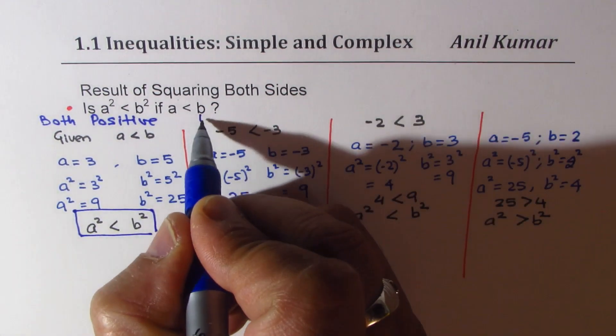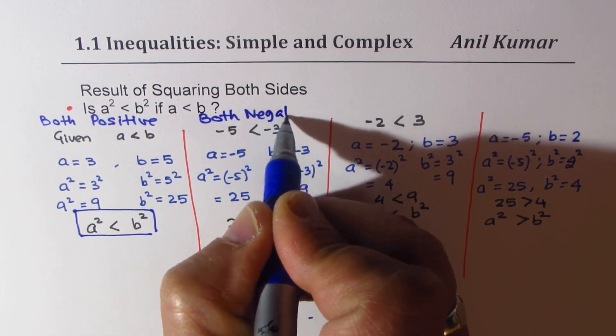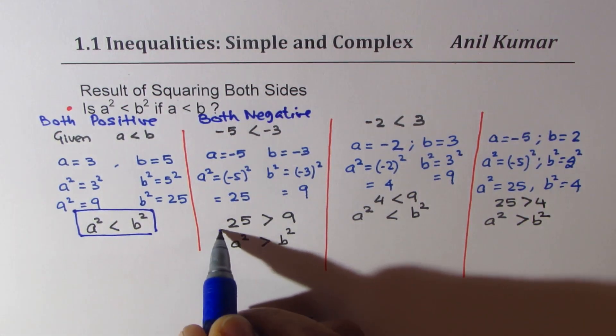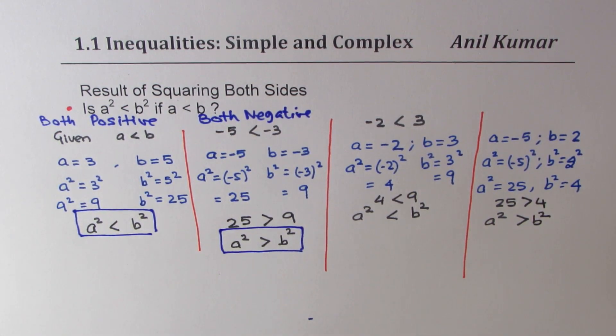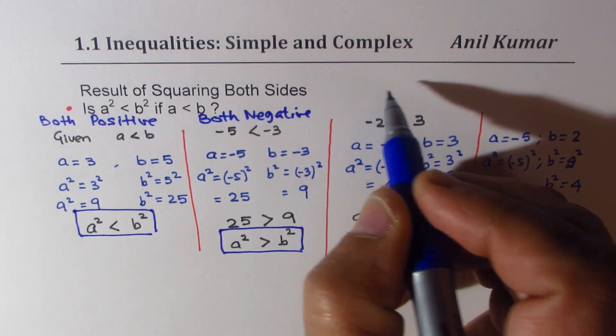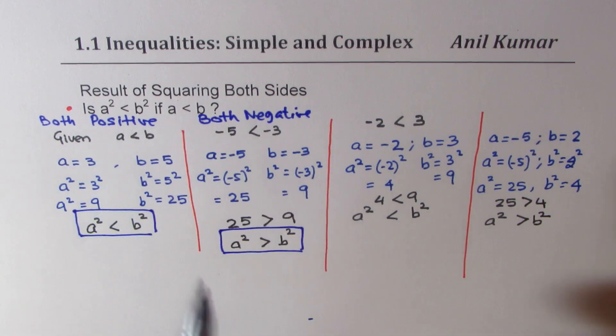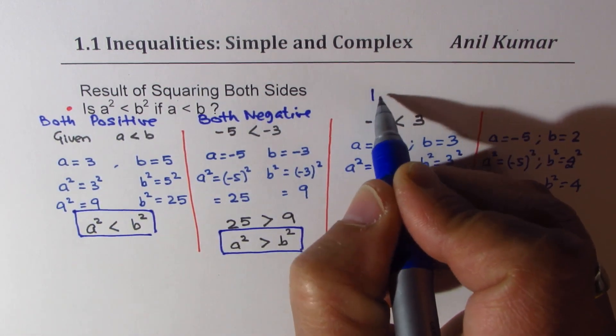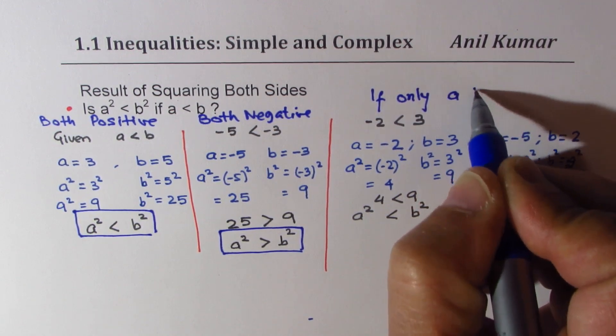So, if we take both negative, what happens? We get that it kind of reverses. Simple to understand. But what happens if a is negative? Because a is smaller than b, so, if only a is negative.